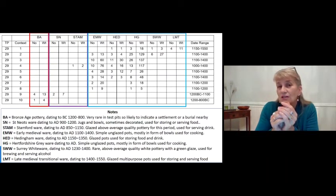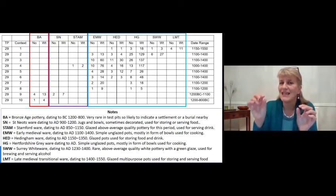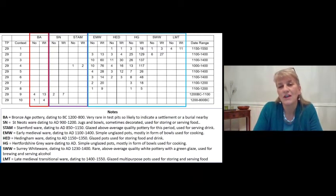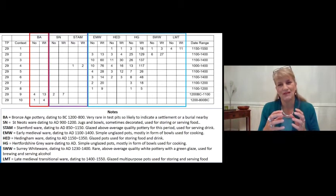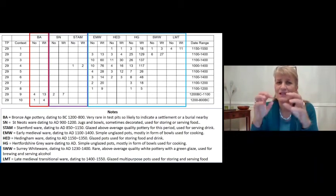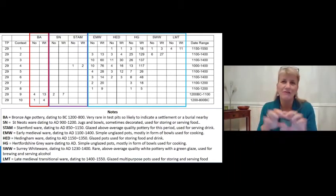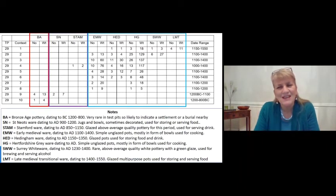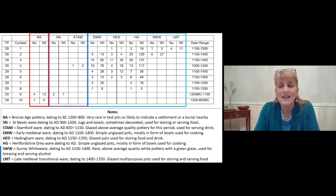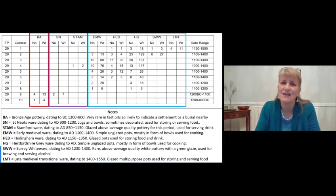Those four Late Medieval Transitional sherds could be as early as 1400 or as late as 1550. Looking at the other columns — the Early Medieval Ware, the Hedingham Ware, the Hertfordshire Grey Ware — they're all present in large numbers in contexts where there's nothing much later, suggesting undisturbed medieval deposits. Interesting finds include seven sherds of Surrey White Ware, which is above average quality pottery, suggesting something a little above average in terms of importance and the wealth of the people there.